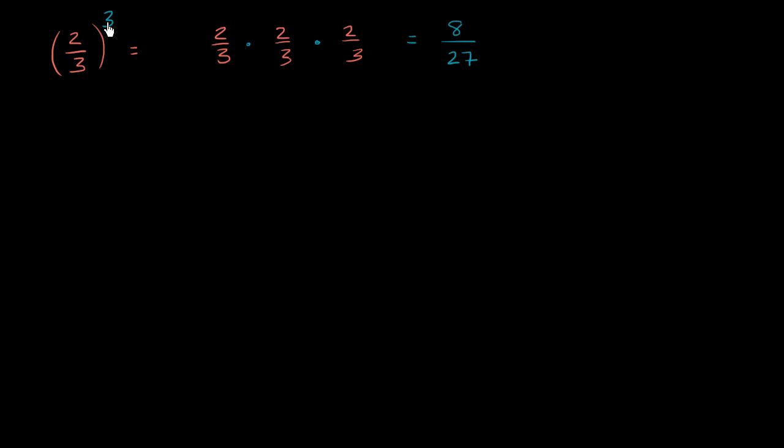Now the other way of viewing this is you start with a 1, and you multiply it by 2 thirds three times. So you multiply by 2 thirds once, twice, three times. You will get the exact same result here.